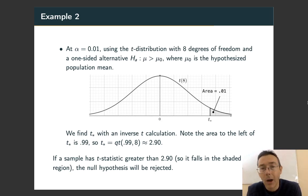So again, if we go out and get a sample and it has a t-statistic greater than 2.90, so it falls in the shaded region, then we're going to reject the null hypothesis.